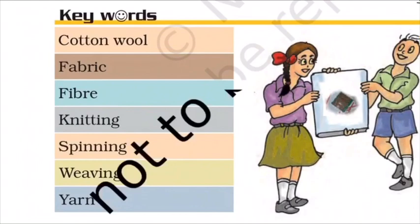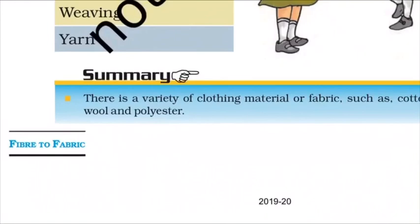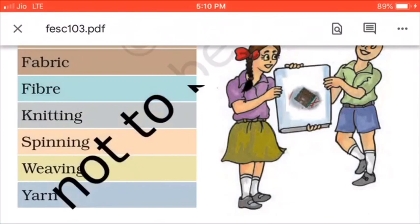Spinning is the process of making yarn from fibers. Weaving is the process by which two sets of yarn are arranged to make fabric. Yarn is obtained from fibers after spinning. Hope you enjoyed the teaching. If you like the video, please subscribe to the channel and press the bell icon to get the latest chapters. Thank you.